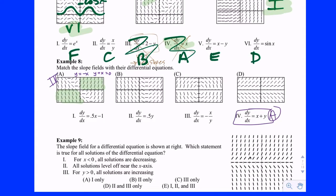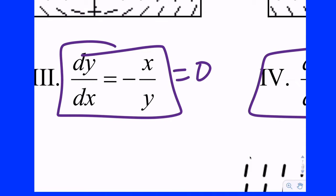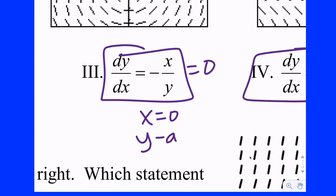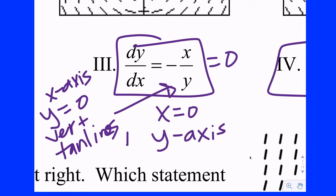Now let's do the next one by equation. You might have an equation and then five different graphs to match it up to. Start with the equation — think about where you're going to have zero slopes. You're going to have zero slopes when the numerator is zero, so x equals zero is the y-axis. Look for a graph that has horizontal tangent lines up and down the y-axis. You also notice that when y is zero you're going to have vertical tangent lines, because you have non-zero over zero.